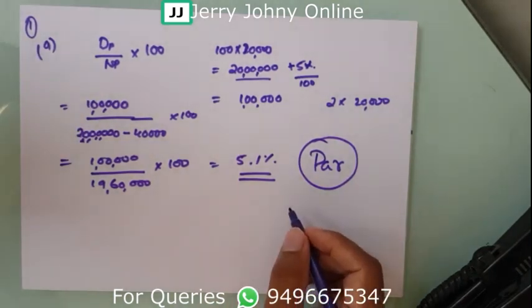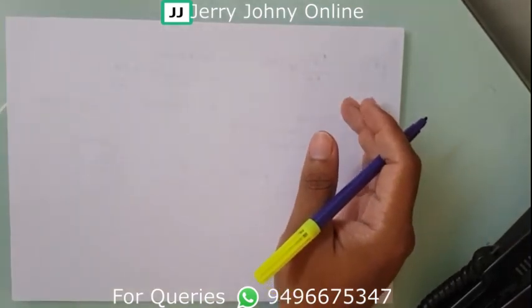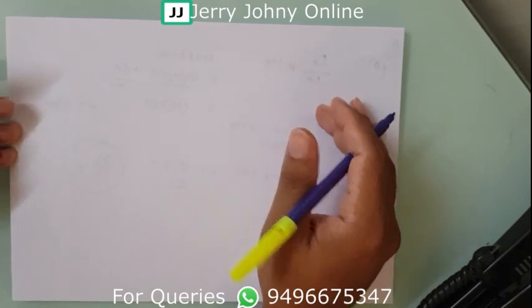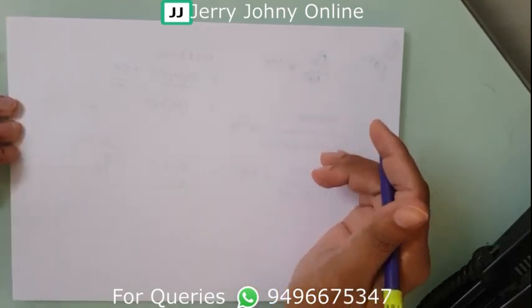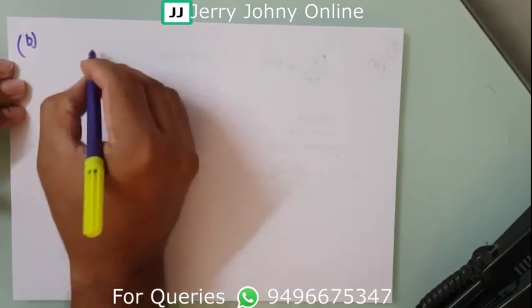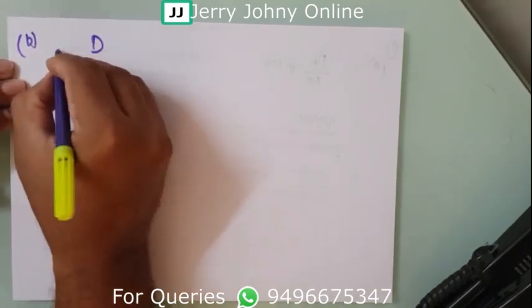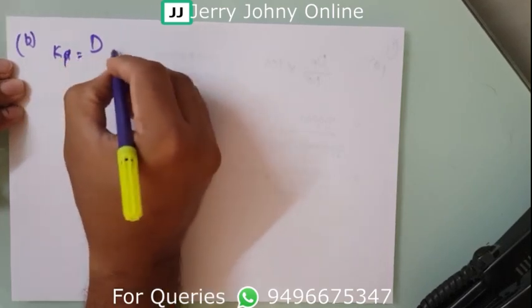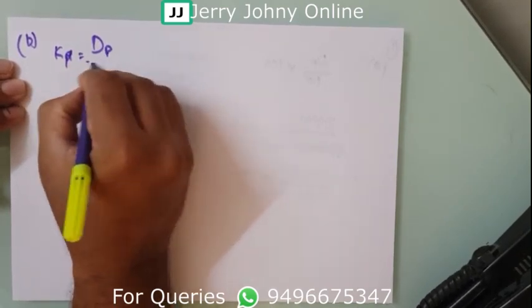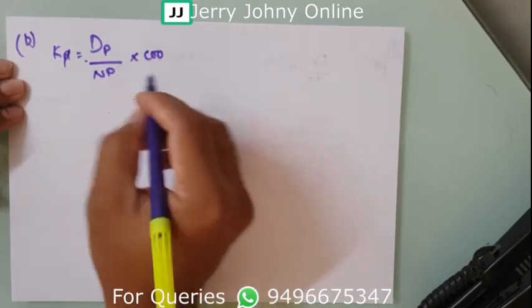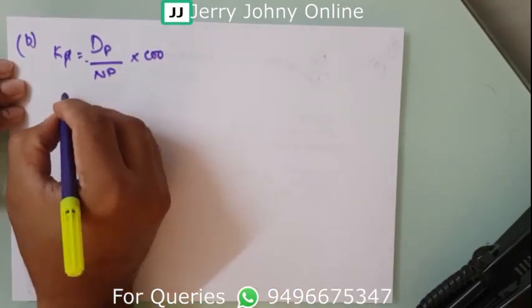Now let us look at Part B: when shares are issued at a premium of 10%. The formula remains the same: kp = dp / NP × 100.